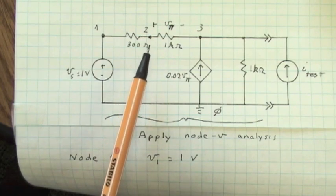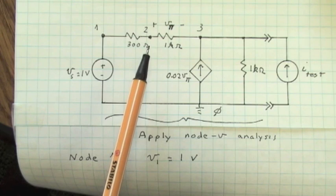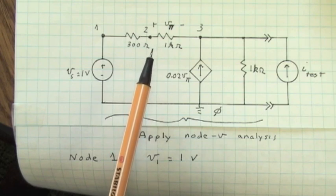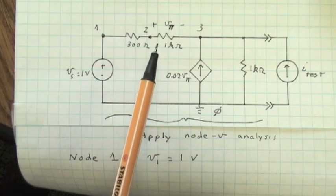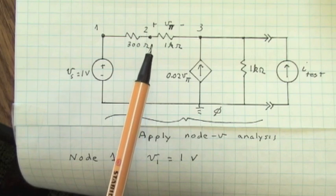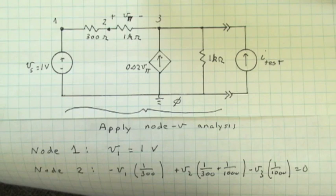Now at node voltage 2, we can write as a node voltage equation minus V1 times 1 over 300 plus V2 times the quantity 1 over 300 plus 1 over 1K minus V3 times the quantity 1 over 1 kiloohm is equal to zero. There's no current sources flowing into node 2. And here we have written down that expression.